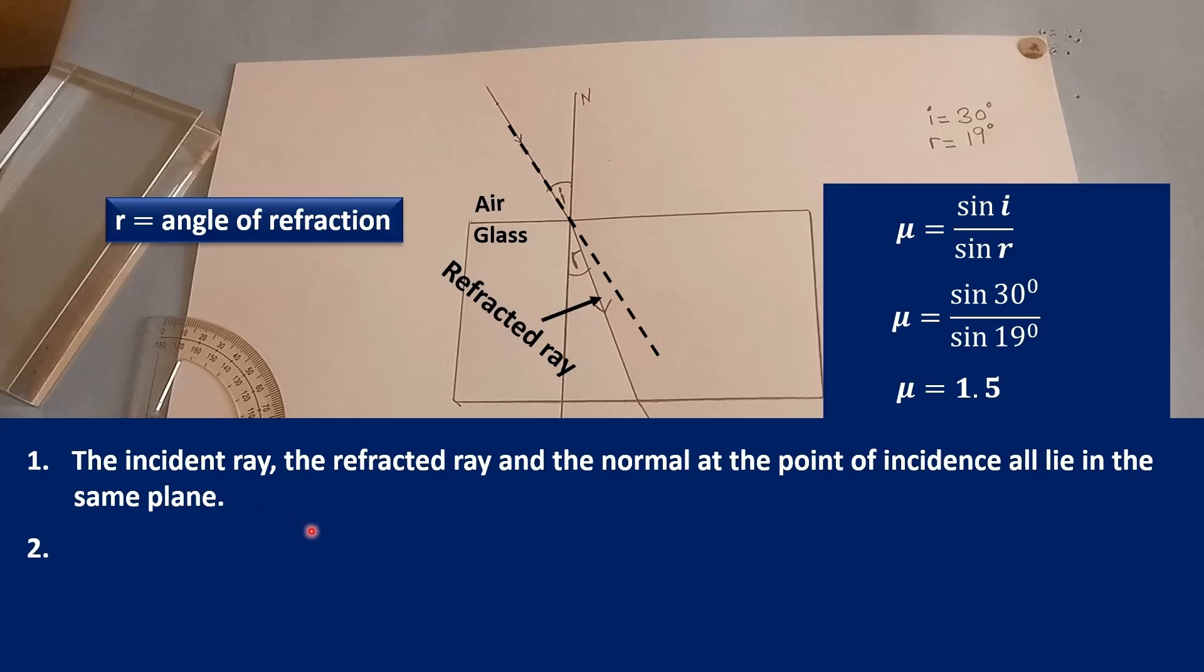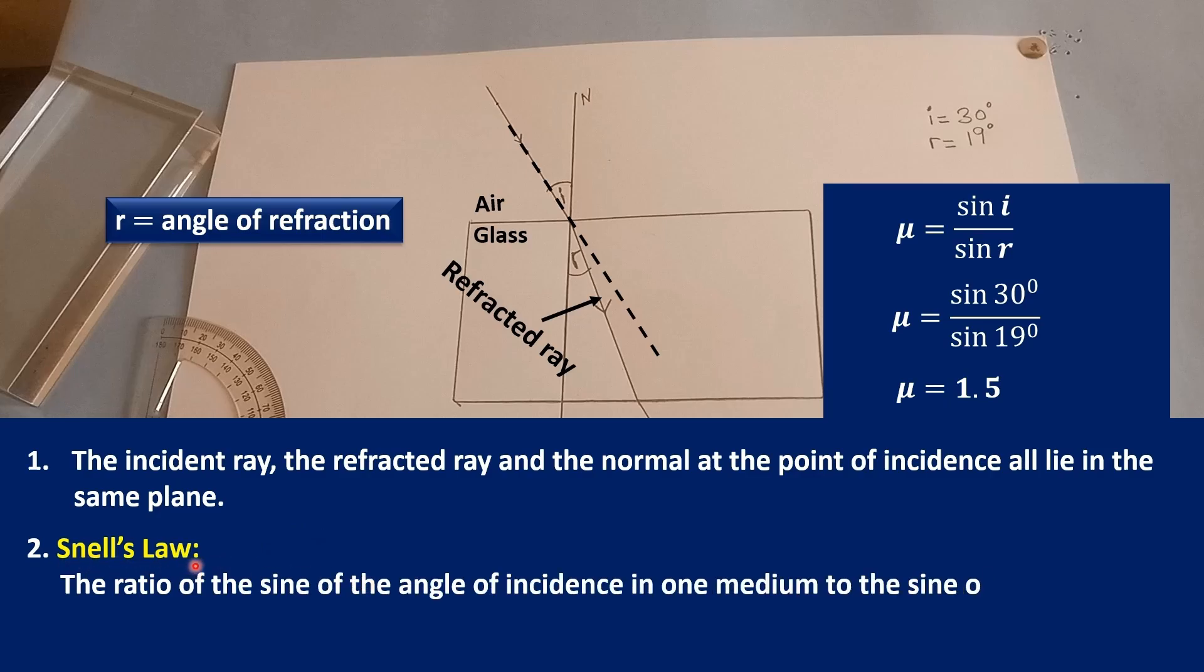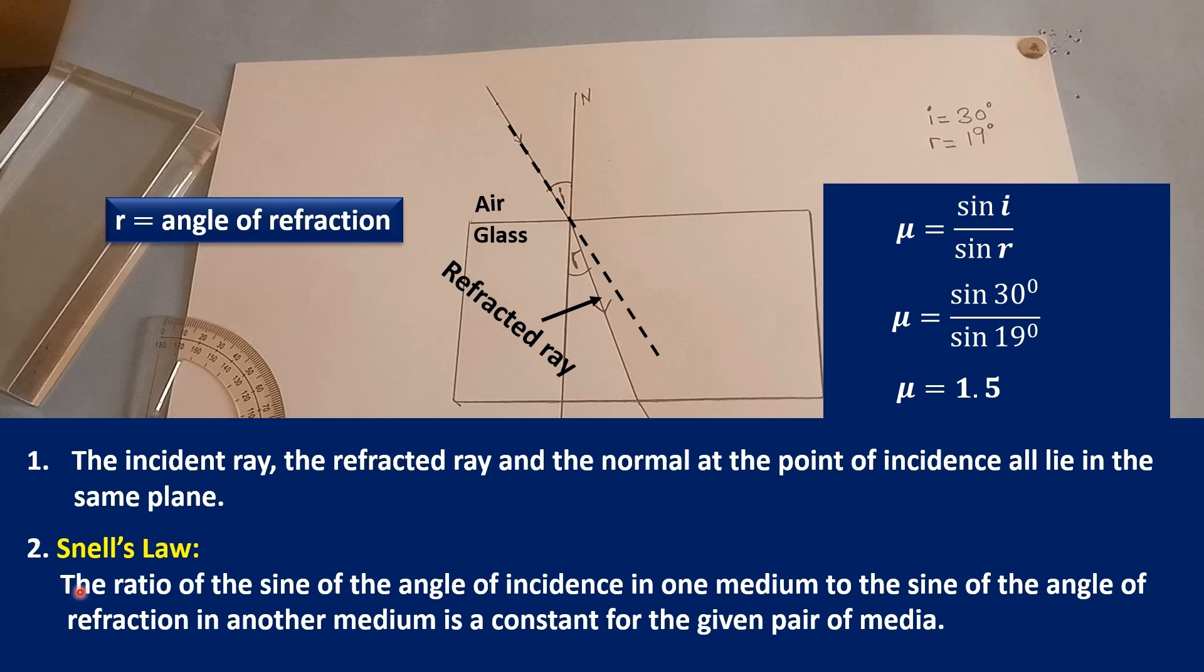And the second law, known as Snell's law, states that the ratio of the sine of the angle of incidence in one medium to the sine of the angle of refraction in another medium is a constant for the given pair of media.